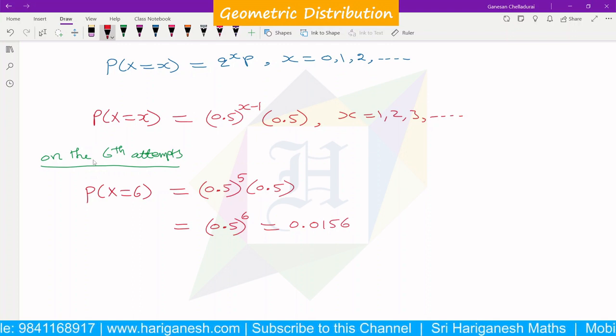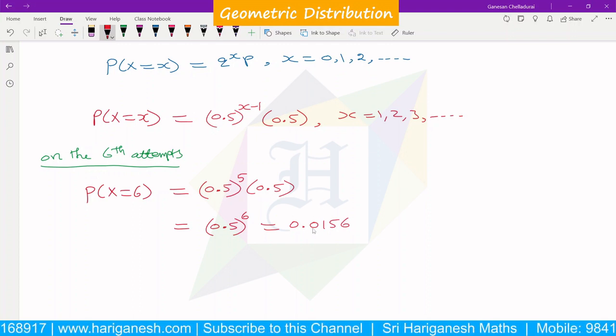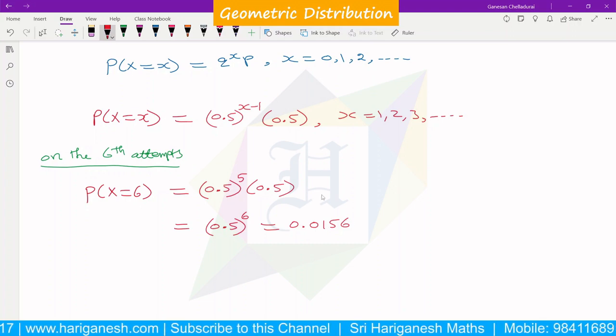So the answer is: on the sixth attempt, the probability of destroying the target is 0.0156. This is the answer.